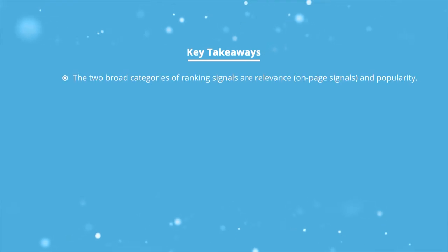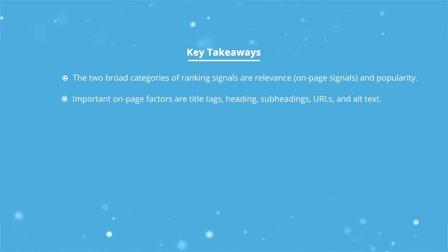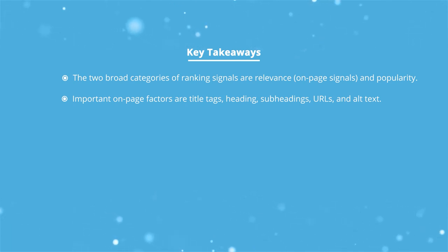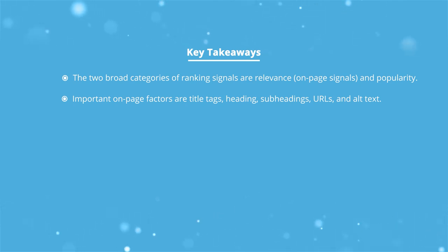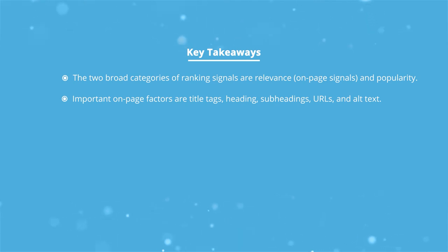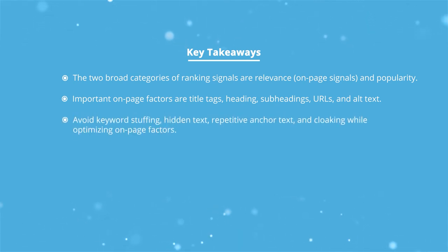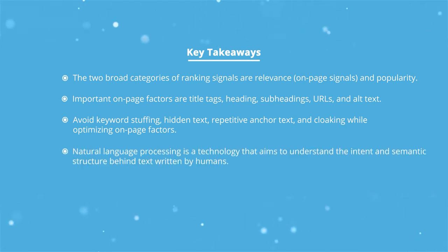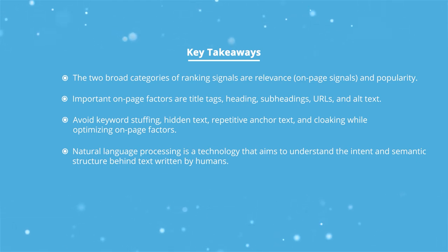The two broad categories of ranking signals are popularity and relevance. Of the on-page factors, the page title is the most important individual field. The URL is important and should be memorable. Alt text is important for search engines as well as for sight-impaired humans. Avoid keyword stuffing, hidden text, repetitive anchor text, and cloaking. Natural language processing is a technology that aims to understand the intent that humans have when searching for information.